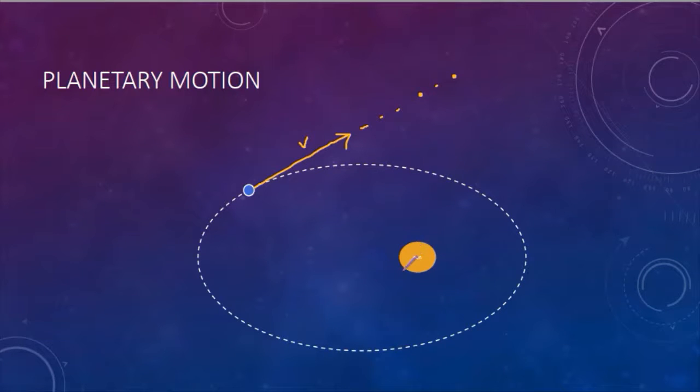But there's a sun here exerting some force, that's the gravitational force. The force changes the direction of the motion, it changes the direction of velocity and also the magnitude of the velocity.